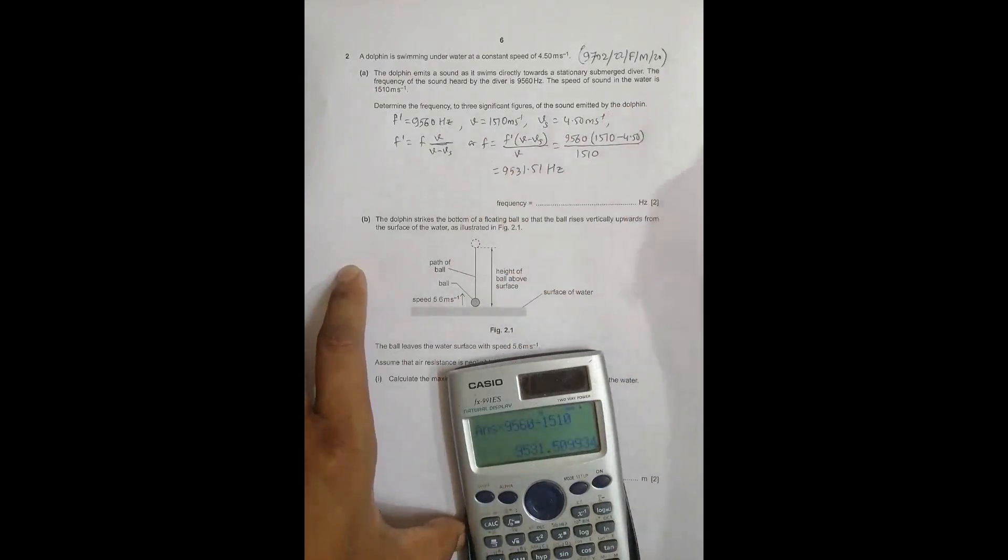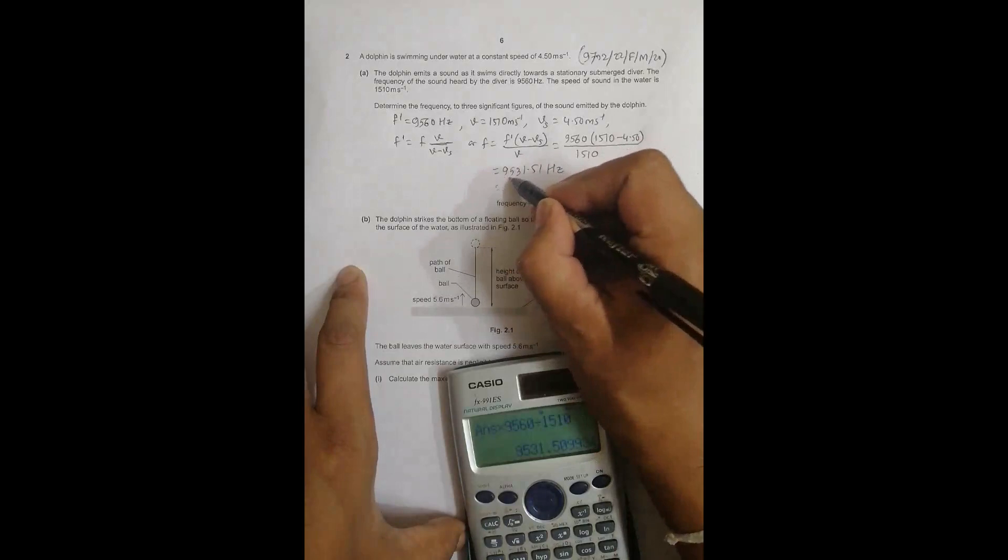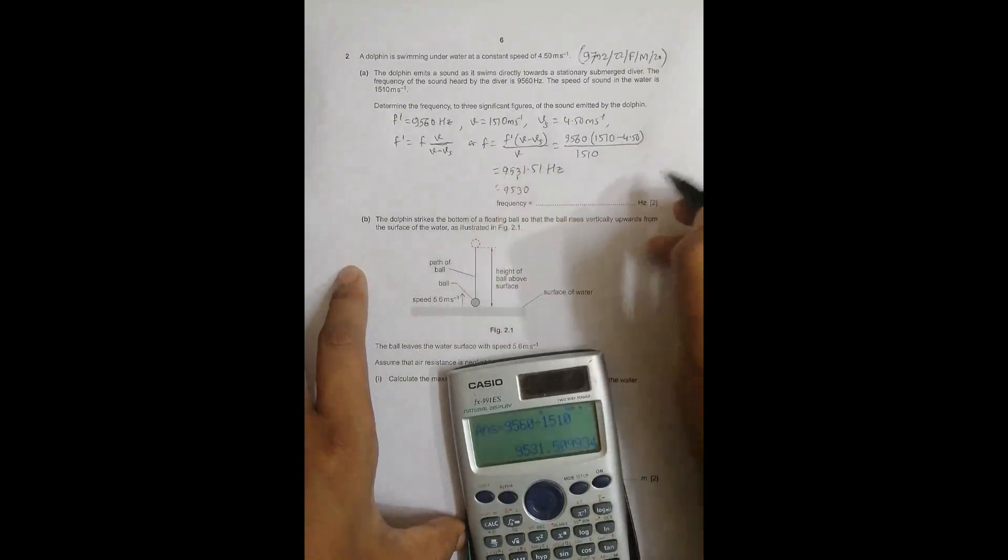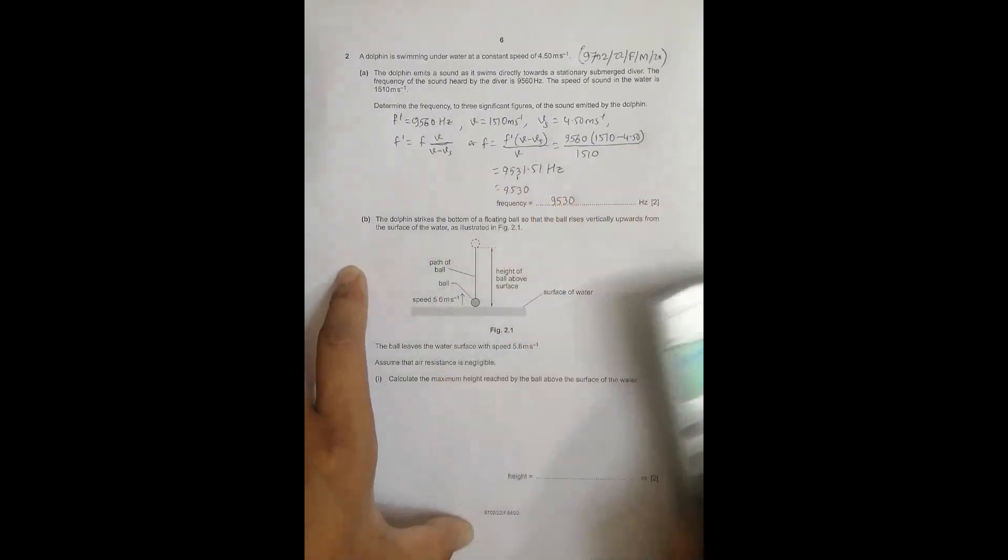The question asks to express the answer in three significant figures. Counting 1, 2, 3 up to here gives us 953, and rounding the rest gives 9530 hertz in 3SF.